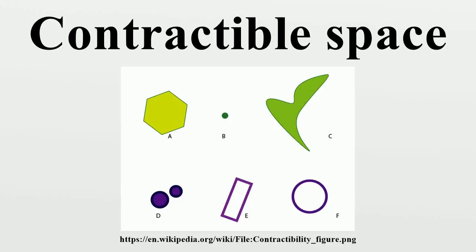In mathematics, a topological space X is contractible if the identity map on X is null-homotopic, i.e., if it is homotopic to some constant map. Intuitively, a contractible space is one that can be continuously shrunk to a point.